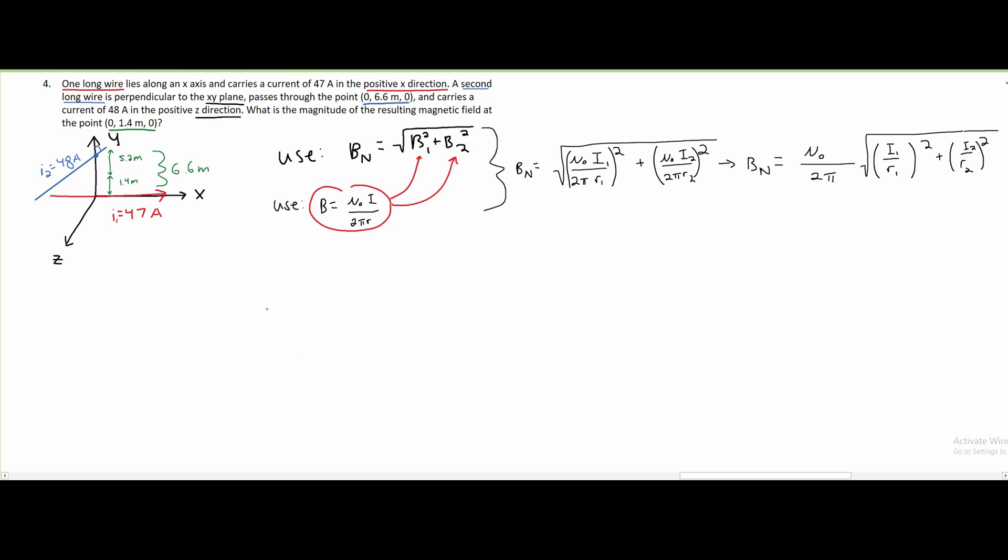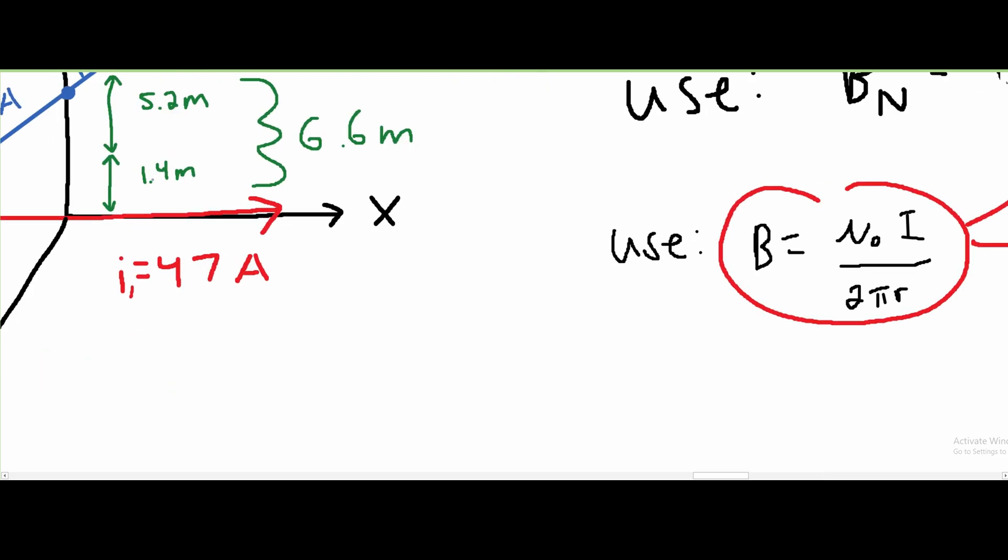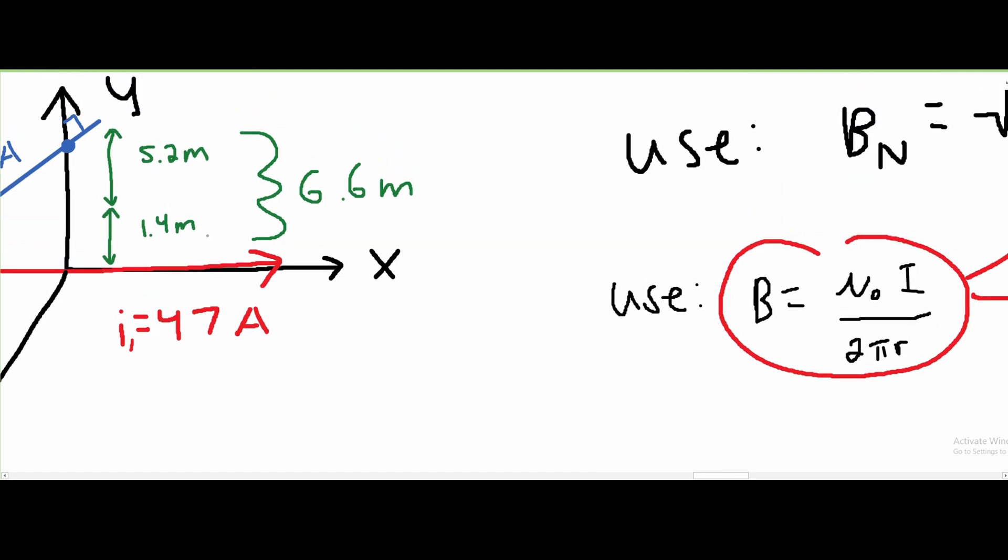Now, we can begin to start plugging in our values. We have our B_N, and that's going to equal our μ₀, which is 4π times 10 to the negative 7 tesla meters over amps. And this is constant. We're having this over 2π, and we can actually cancel this π and get rid of this 2 and write this as 2. Inside of our square root, we are going to have I1, which is 47 amps over R1. And our R1, because we have these different distances, the R1 that's associated with I1 is going to be 1.4 meters.